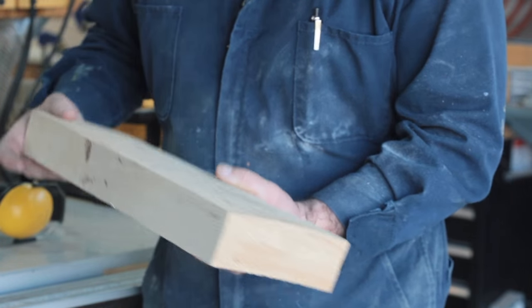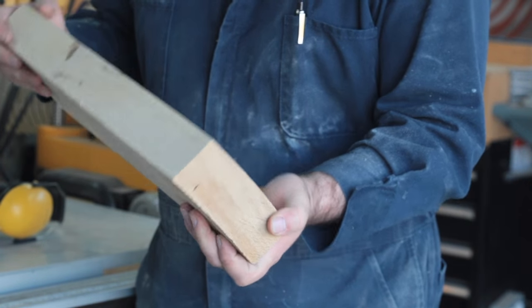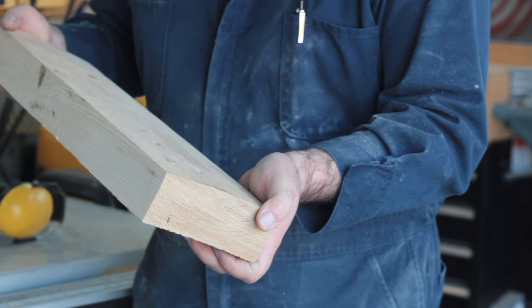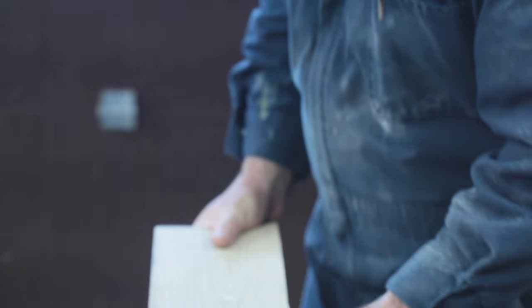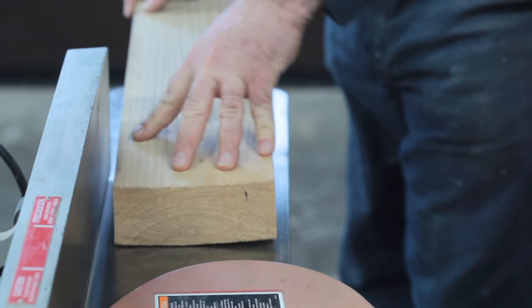The first milling step involves making a flat face on the board using the jointer. The question is which face do you put down if you have a choice. This is the convex side. Let's try putting that down first and see what happens.